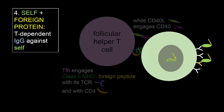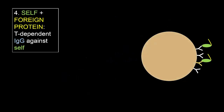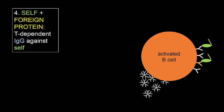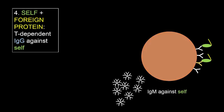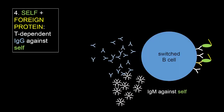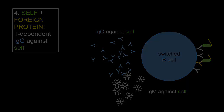The anti-self B cell becomes activated and secretes IgM anti-self, and then switches, releasing IgG against the self protein. This is thought to be the mechanism of the autoimmune aspect of celiac disease.